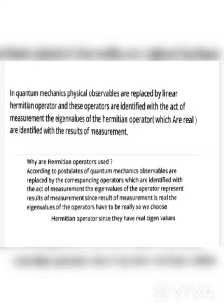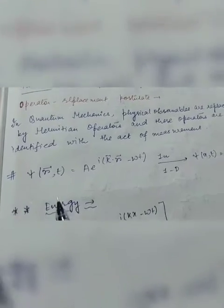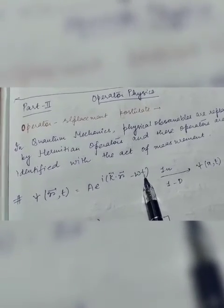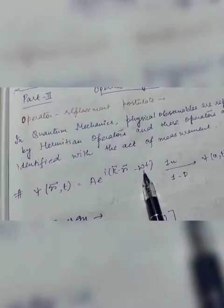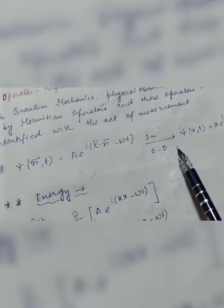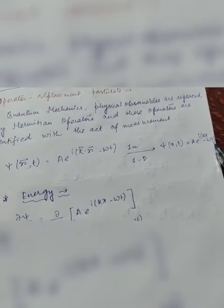We know how a wave function psi can be expressed in terms of propagation vector and angular frequency. In three dimensions, psi equals A e^(i k·r − ωt), where k is the propagation vector and ω is the angular frequency, with r as the position vector. In one dimension, if the wave is traveling along the x direction, we write psi as A e^(i kx − ωt).